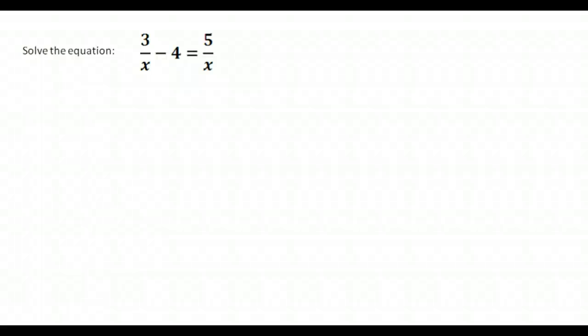This time all of our examples will have variables in the denominator, which tends to trip people up a bit. When you have fractions involved in the equation, usually the easiest thing to do is to multiply everything by the least common multiple so that you can eliminate all of the denominators.